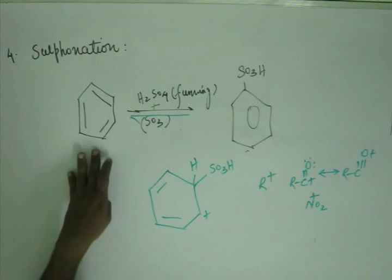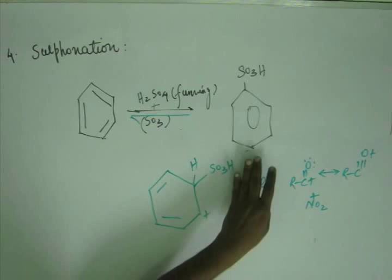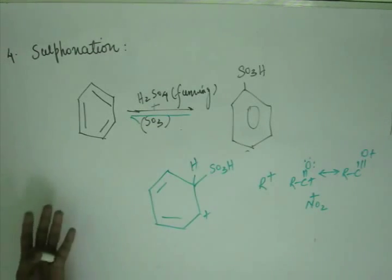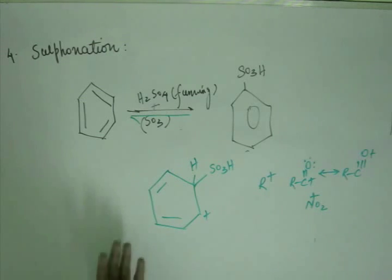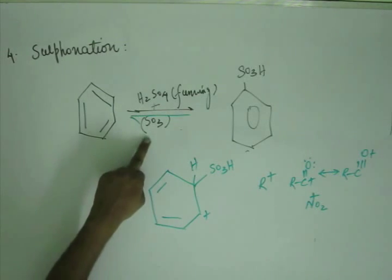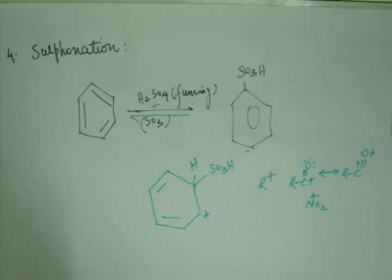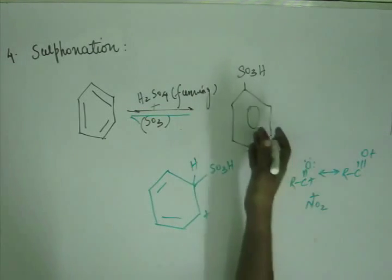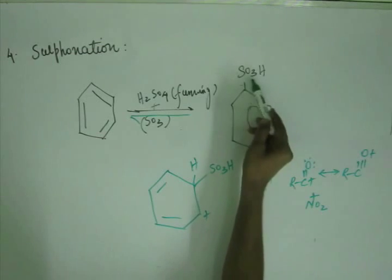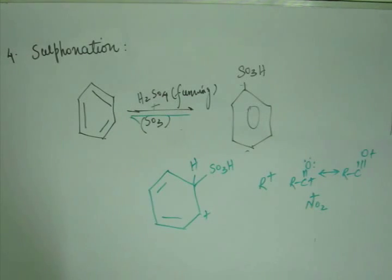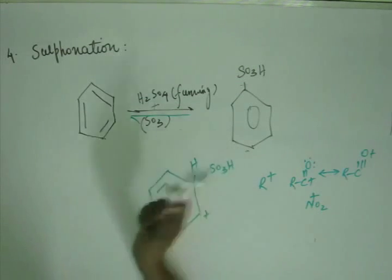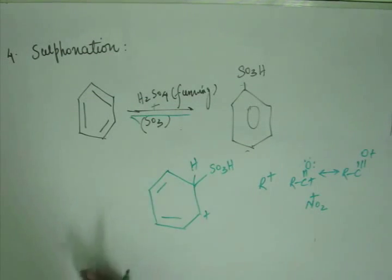So if we sulfonate benzene, we get benzene sulfonic acid. But if we heat benzene sulfonic acid in presence of H₂SO₄ and water, we get back sulfuric acid and the benzene ring. The reason is that when SO₃ dissolves in water, sulfuric acid is formed, releasing a huge amount of energy. So the sulfonyl ion SO₃H⁺ and hydronium ion from water regenerate sulfuric acid, releasing energy and driving the reaction backward. Because of the stability of the sulfonyl ion, sulfonation is reversible.